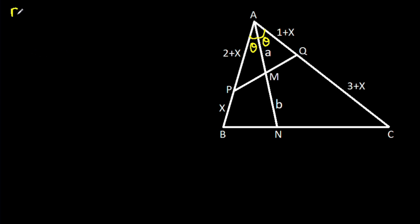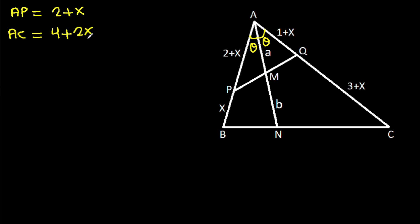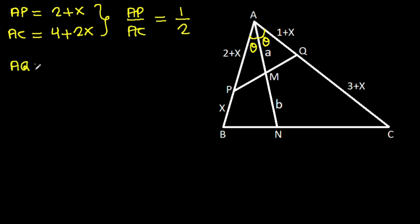Now, AP is 2 plus X, and AC is 1 plus X plus 3 plus X — that means AC is 4 plus 2X. That means AP over AC is 1 over 2. And AQ is 1 plus X.